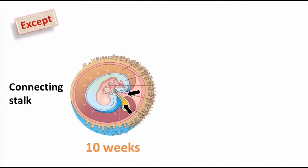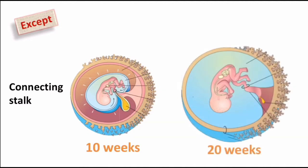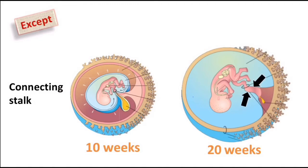By subsequent development, the duct and the yolk sac will disappear. In the next picture, a fetus of 20 weeks is shown. In the earlier picture the amniotic cavity was small, but with further development the amniotic cavity has enlarged and abolished the chorionic cavity. The amnion and chorion have now fused, and the connecting stalk — now termed the umbilical cord — is covered by amnion.